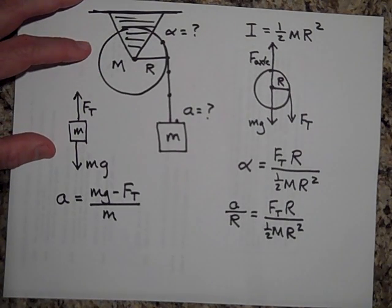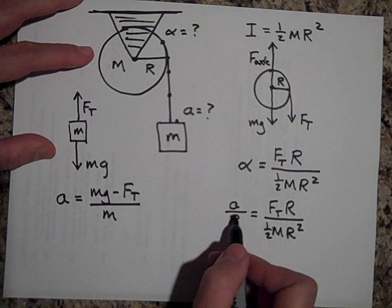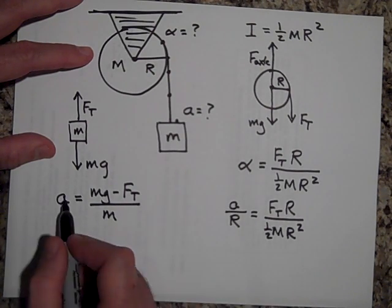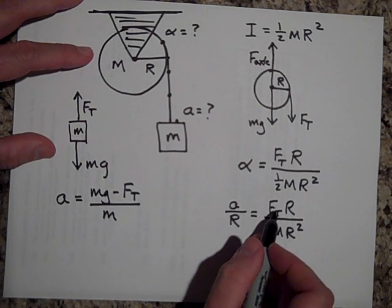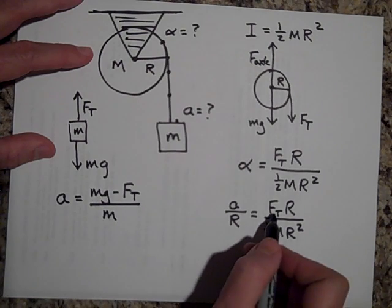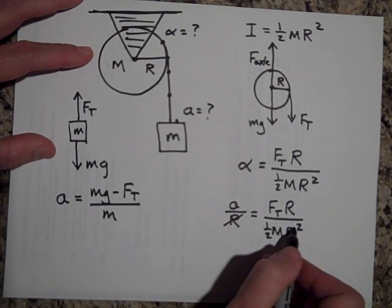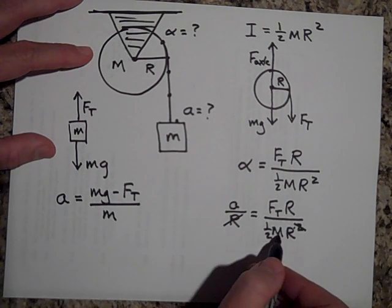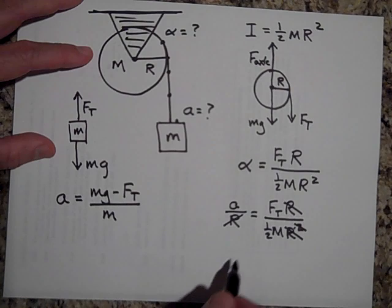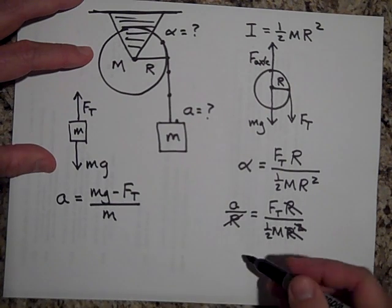Okay, I'm gonna solve this and get rid of, I'm gonna solve this for FT and bring it over there and then I'll only have one unknown. So let me solve this for FT. Looks like FT is one half ma.